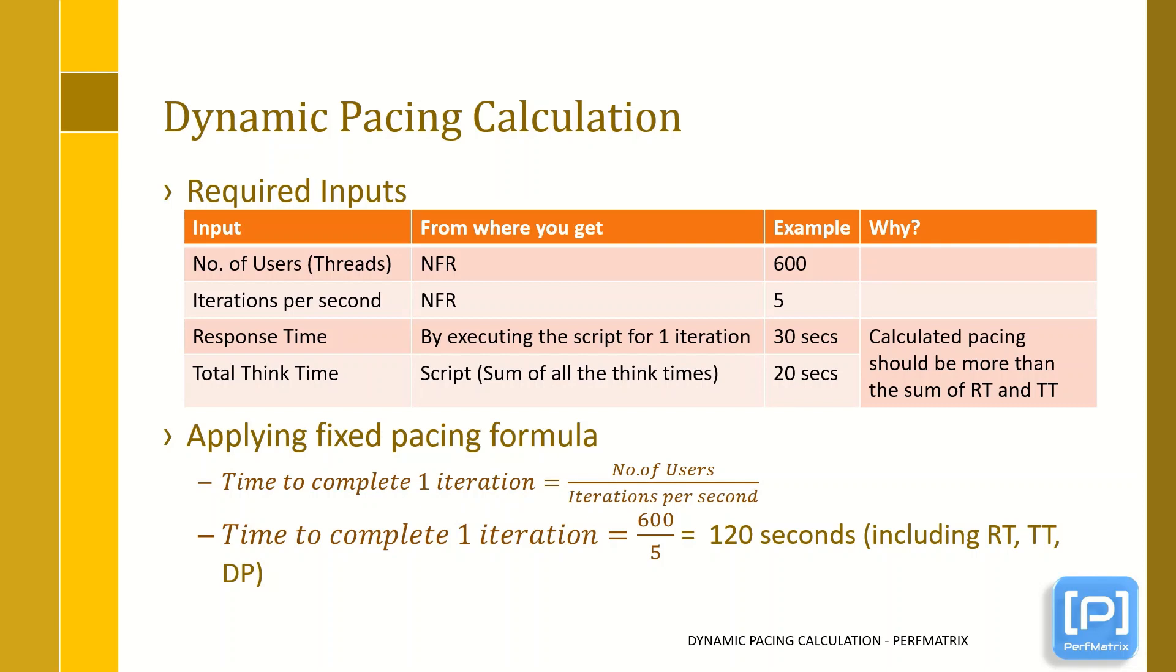Another two metrics, which are total think time and response time, are required to validate the condition of dynamic pacing. Ideally, the sum of total think time and response time should not be more than the calculated time to complete one iteration. In this case, the sum of total think time and response time is 50, where time to complete one iteration is 120 seconds, which is more than 50. Hence, it satisfies the condition.